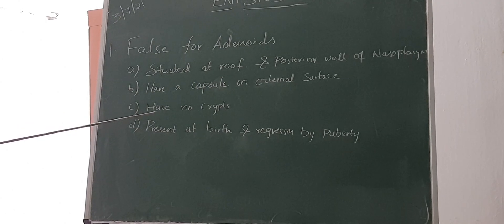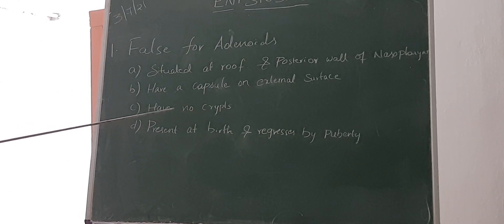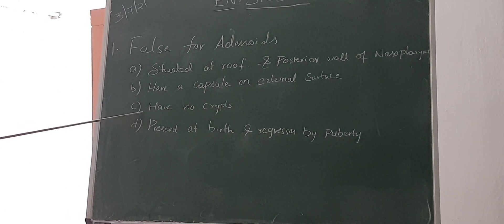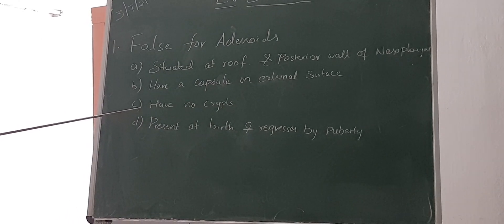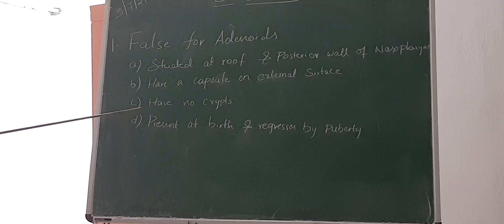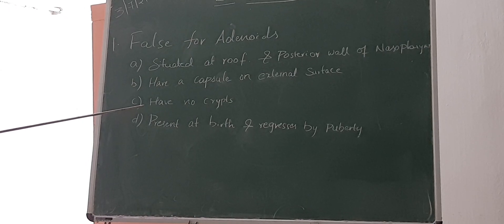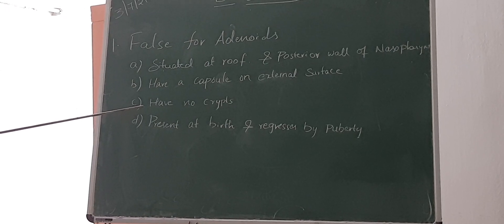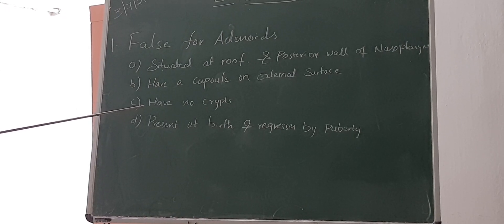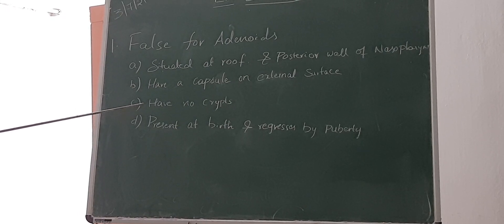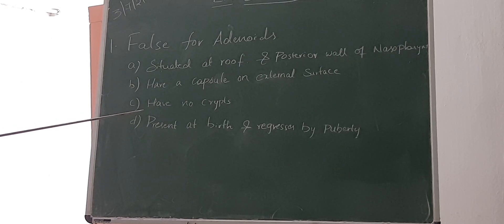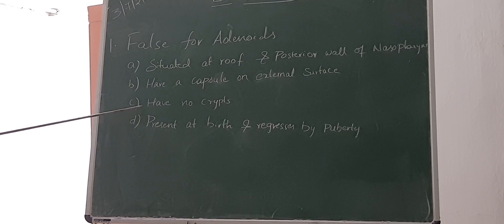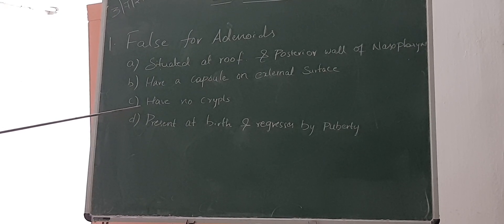They have no crypts. Are crypts present in adenoids? No. Crypts are present in tonsil. What is the largest crypt called? Cryptomagna. It is helpful for increasing the surface area for immunity.